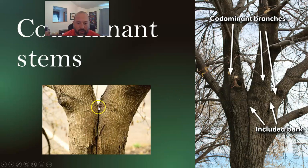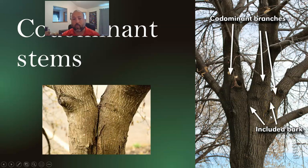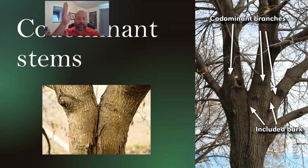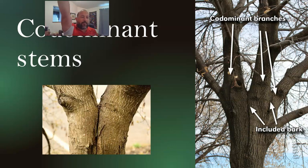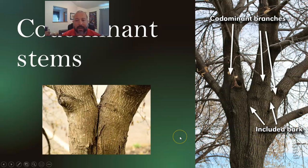Codominant stems with included bark are not a solid attachment — that's a definite weak point. You can see included bark here creating a weakened union. With lots of codominant branches, there are many ways the tree can fail and a lot of different stress. A tree with one big trunk and nice taper can distribute load throughout, but with multiple branches going in all directions and then getting hit by rain or wind, there's much greater potential for failure.